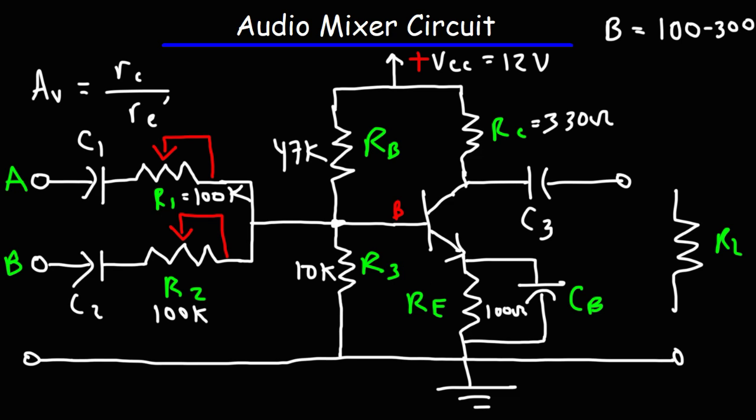Remember, beta is the ratio of the collector current to the base current. So those resistors can control, or at least restrict, the collector and the base current, potentially restricting beta and affecting the overall current gain of the circuit.